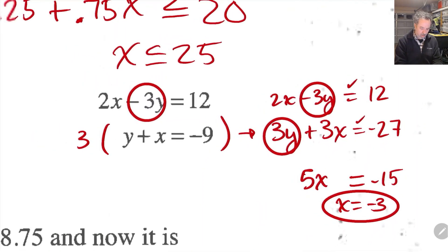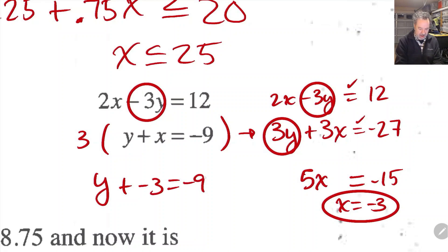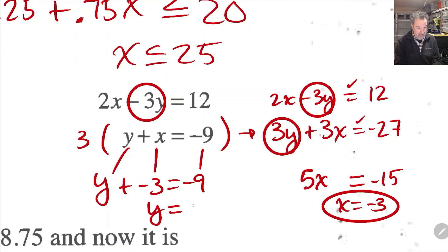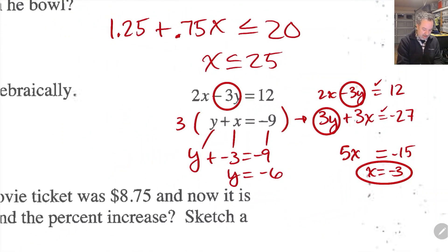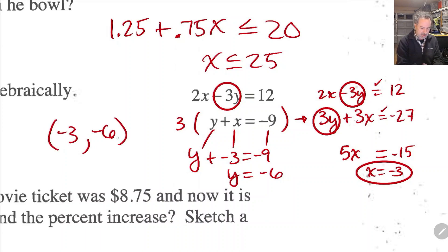Now that I know x is negative 3, I'm going to plug that in and figure out what y is. So y plus x, which is negative 3, equals negative 9 — that's just copying the second equation down. Therefore y equals negative 9 plus 3, which is negative 6. So my solution as an ordered pair is (negative 3, negative 6).